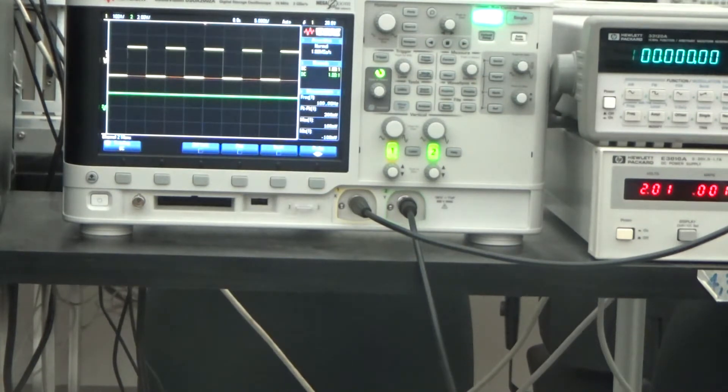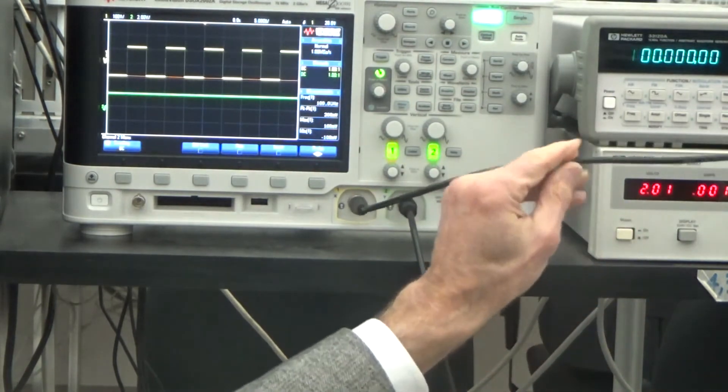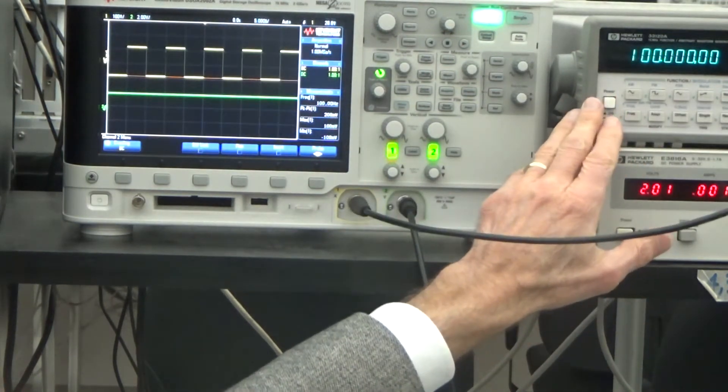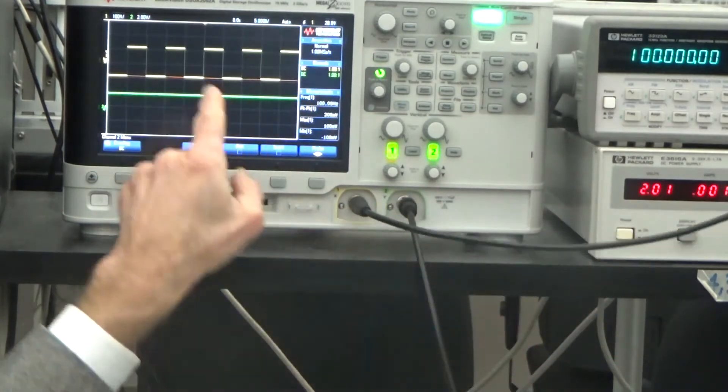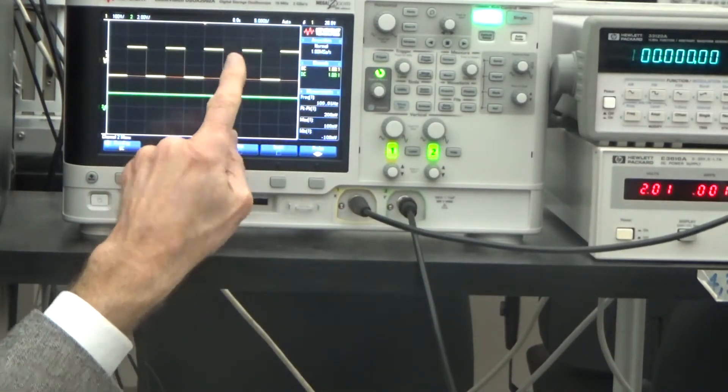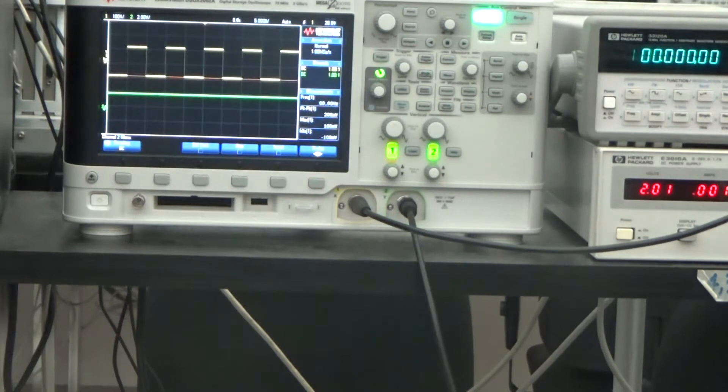One is AC coupling and the other is DC coupling, and I want to show you two effects that come as a result of your choice of DC or AC coupling. So what I have here is the function generator that is set to 100 Hz square wave and it is displaying a 100 Hz square wave on the oscilloscope.